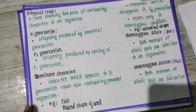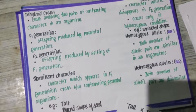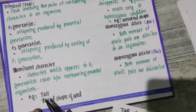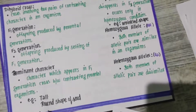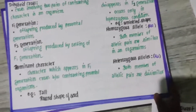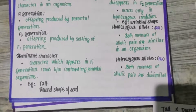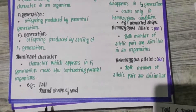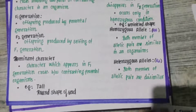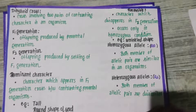Next, dominant character. The dominant character is the one that is expressed in the first generation, the F1 generation. For example, tallness is dominant, and round shape of seeds is dominant, while wrinkled shape is recessive. If you see the F1 generation and a character disappears, that character is recessive; the one that is expressed is the dominant character.